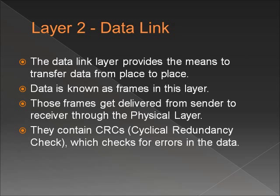The data link layer is layer number two. It is broken up into two sub-layers: the MAC and the LLC. The MAC is the physical address of the network. When you go to www.yahoo.com, for example, that is the logical address. The physical address is the country, state, city, room number, etc. The LLC, or Logical Link Control, provides mechanisms that make it possible for several network protocols to coexist within a multipoint network. The data link layer also provides the functional and procedural means to transfer data between network entities, and may also detect and correct errors from the unorganized physical layer.